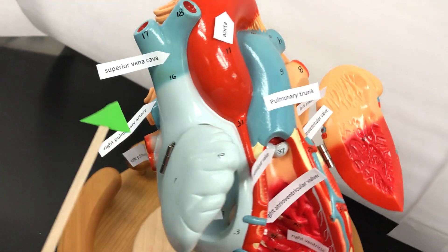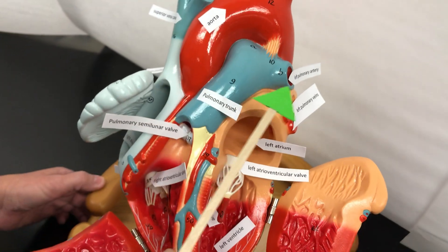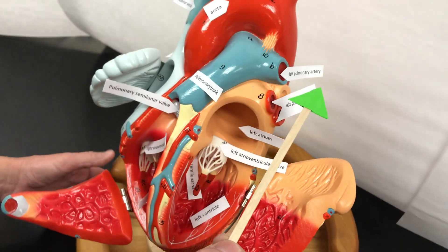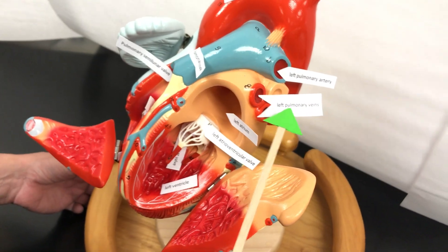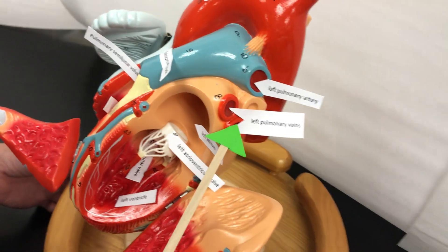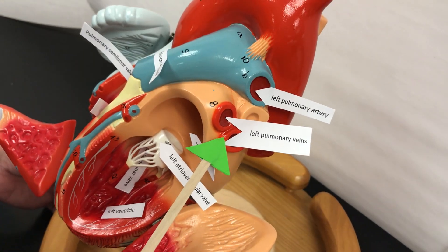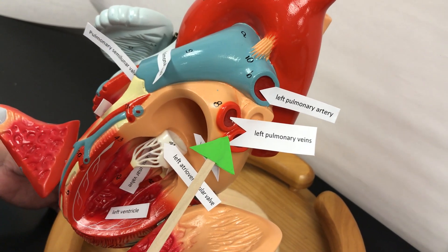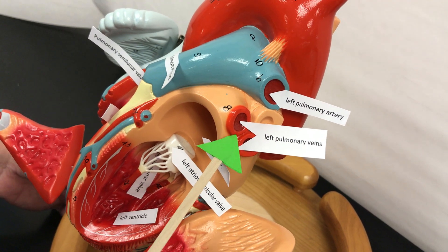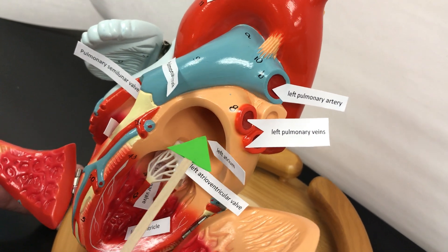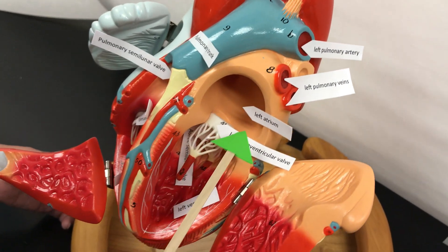Blood is going to go to the lungs and do gas exchange. We're going to bring oxygenated blood back to the heart through the left and right pulmonary veins, and it's going to enter into the left atrium.